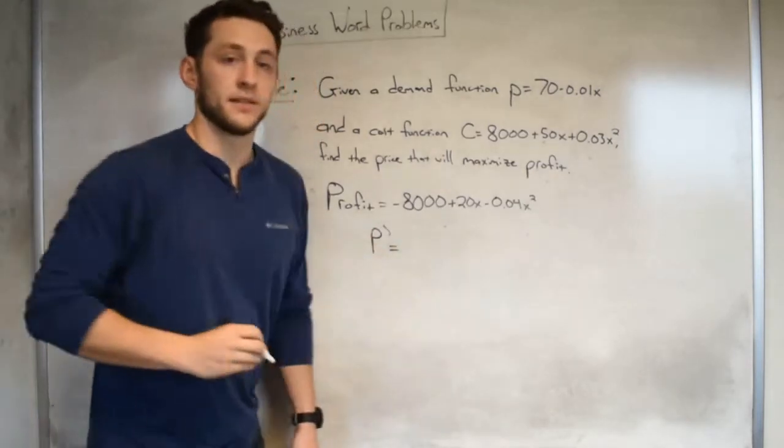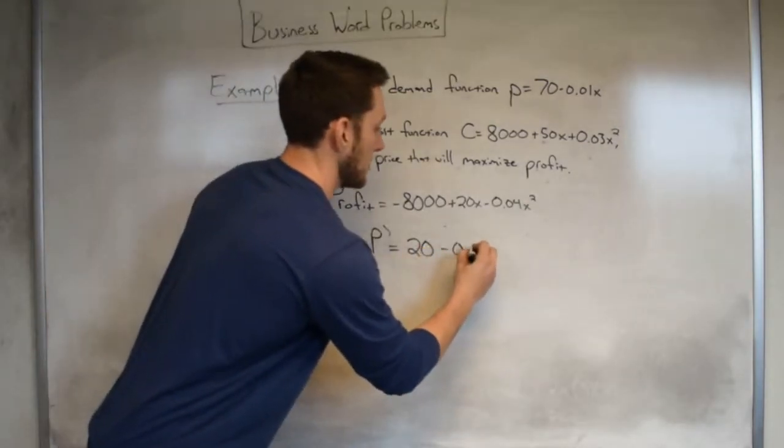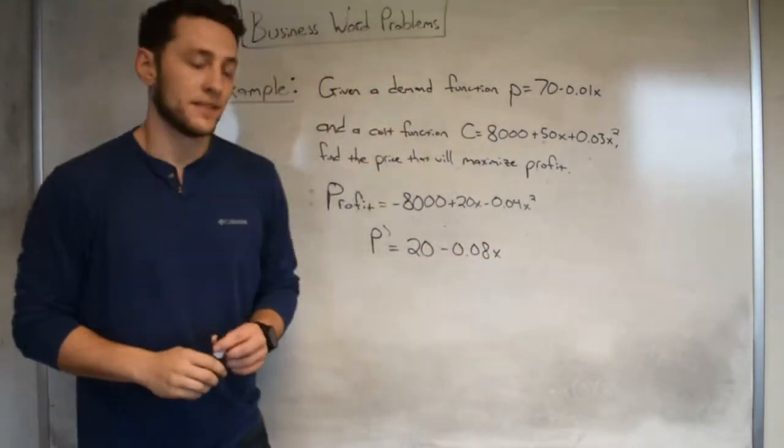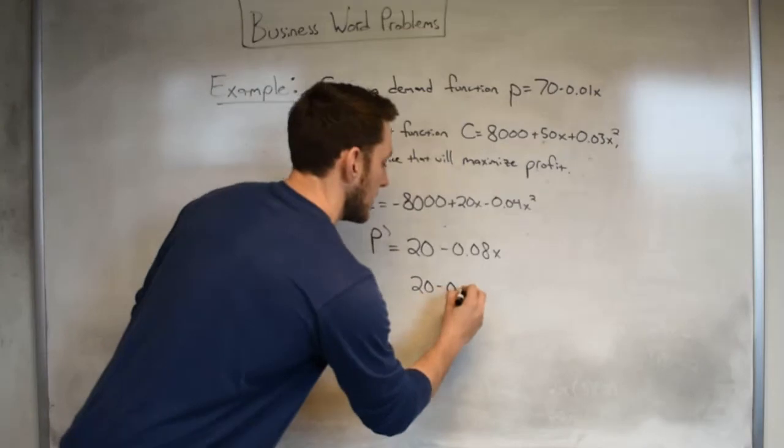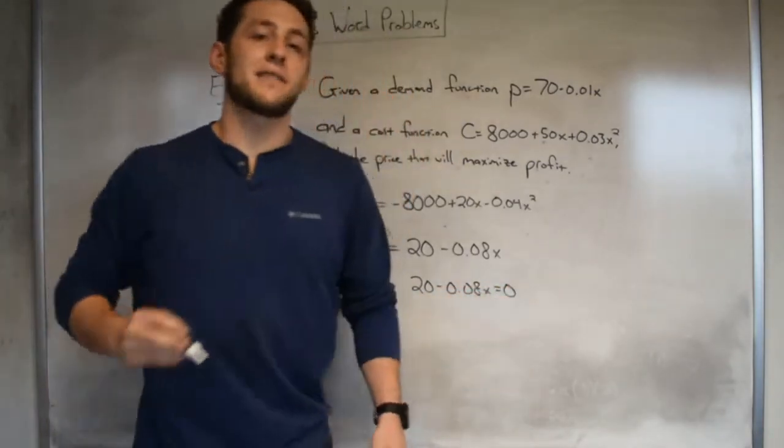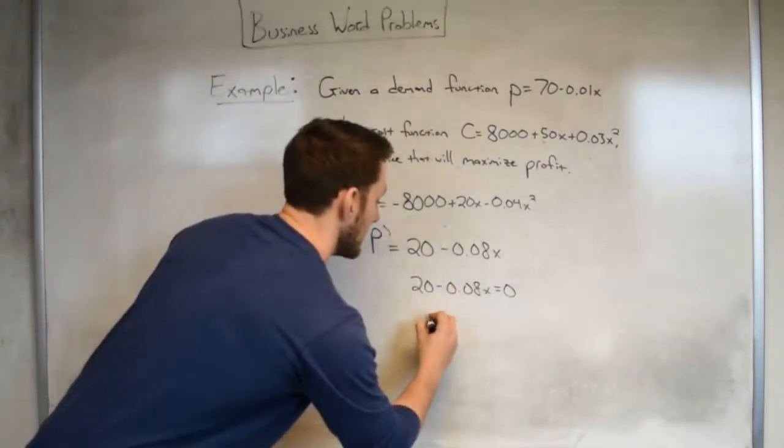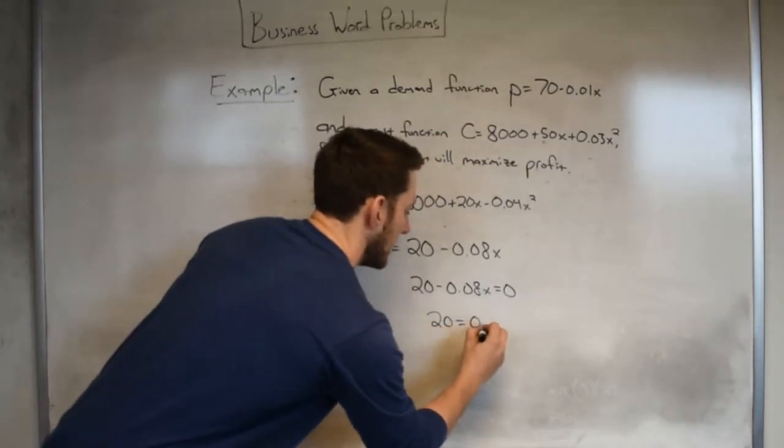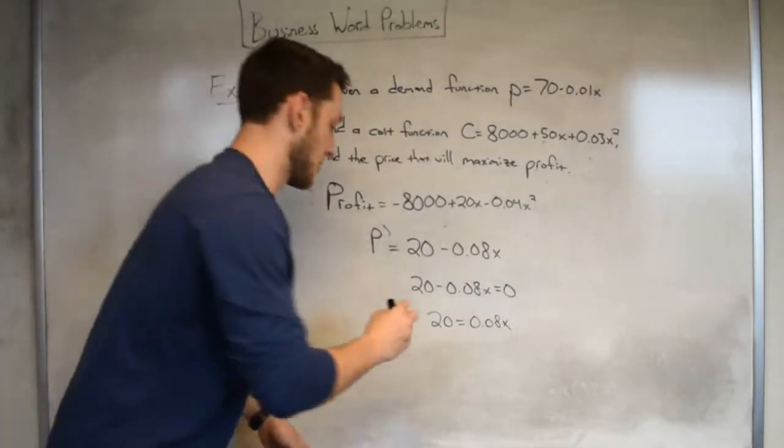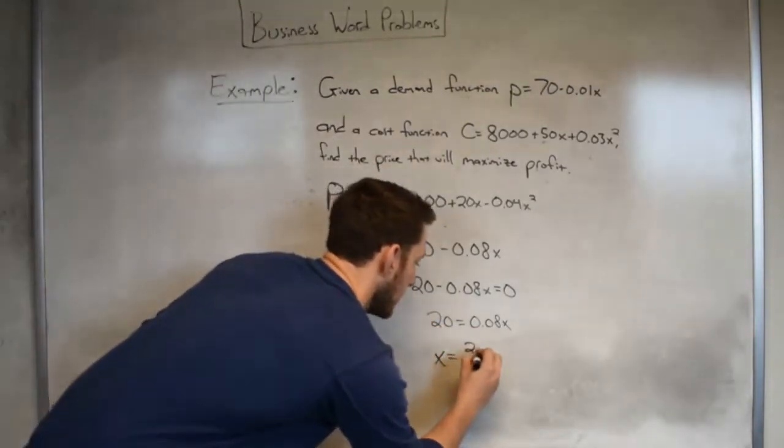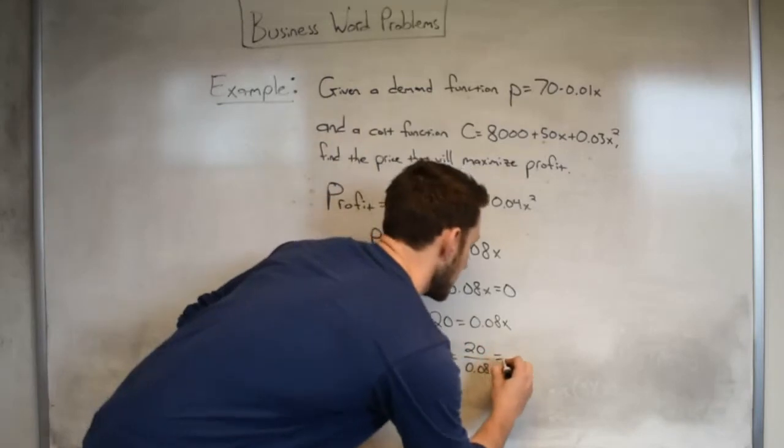We do this by deriving. P prime is equal to 20 minus 0.08x. From there, we set this function equal to 0. And last but not least, to get our hands on the critical points, we solve for x. To do this, we maybe add over the 0.08, and then divide by 0.08. And if we do this, I believe that we should get 250.